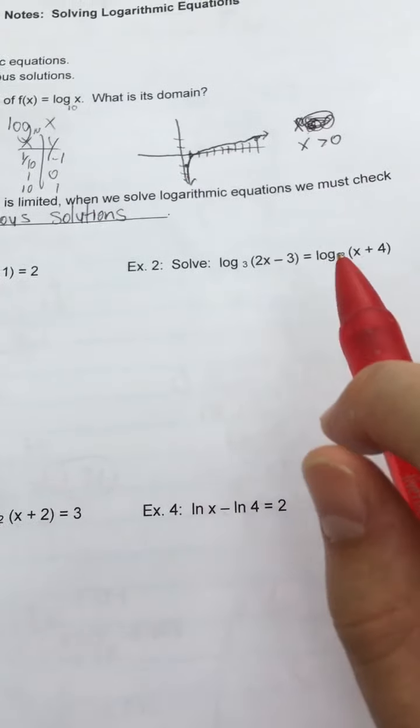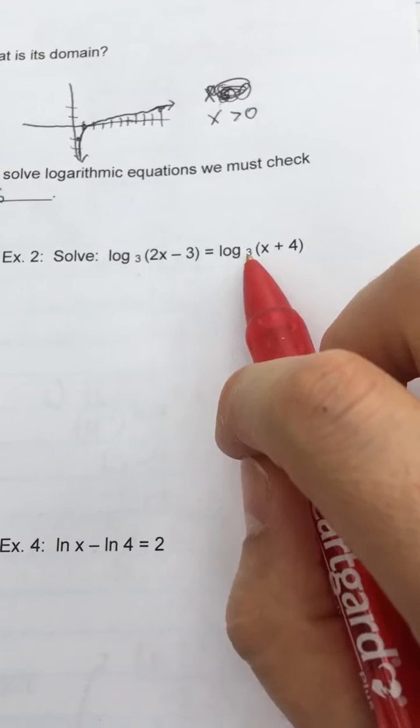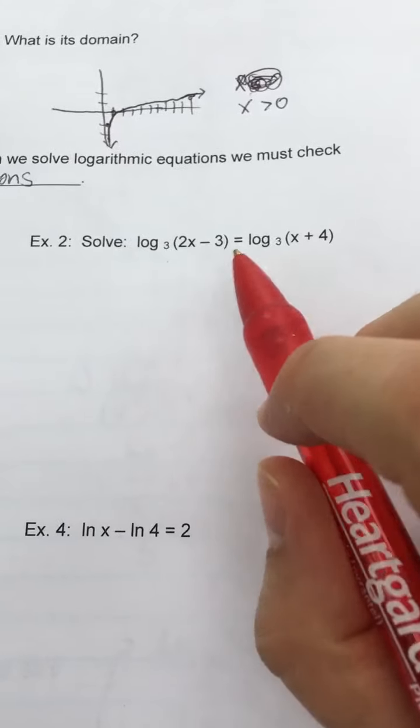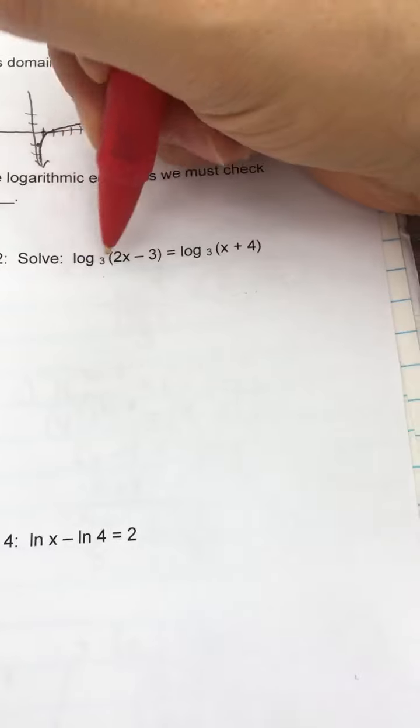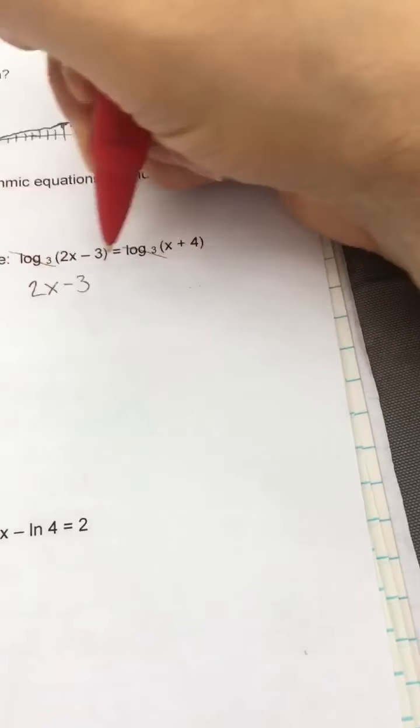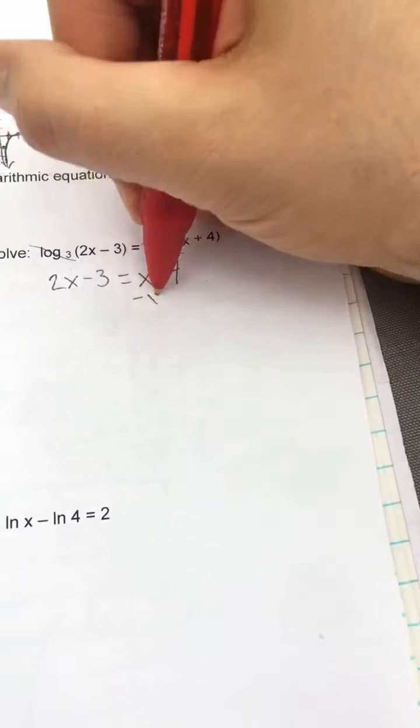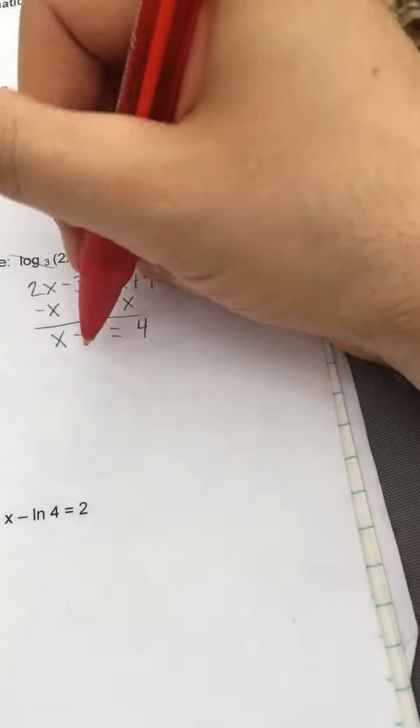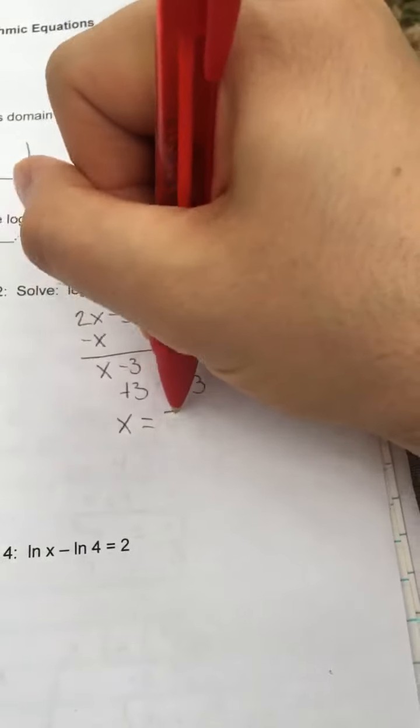So let's look at how do you actually solve these. I actually want to start with example two first. Then we'll come back and do example one. So example two, this one I have log base three on both sides of the equal sign. So if you look at this problem, what equation do you think I'm actually solving here? I'm solving two X minus three equals X plus four. Since I have logs on both sides of the equal sign, I can just basically ignore them, take them off. I'm going to be solving two X minus three equals X plus four. And I'm just going to get my X's together, just like every equation. Subtract X. It gives me X minus three equals four. And then add the three. It's going to give me X equals seven.